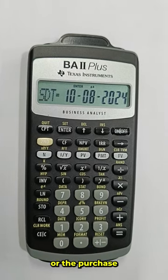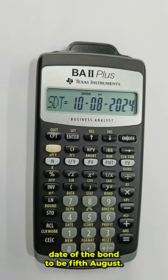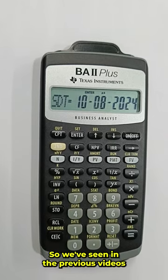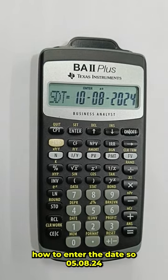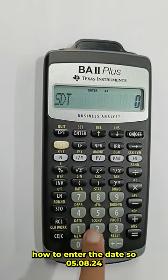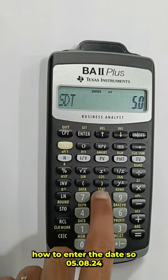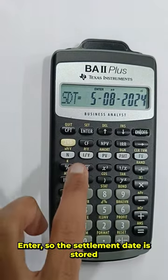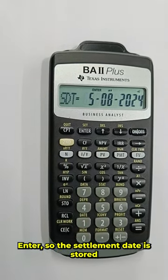Let's take the settlement date or the purchase date of the bond to be 5th August. We've seen in the previous videos how to enter the date. So 05.0824 enter. The settlement date is stored.